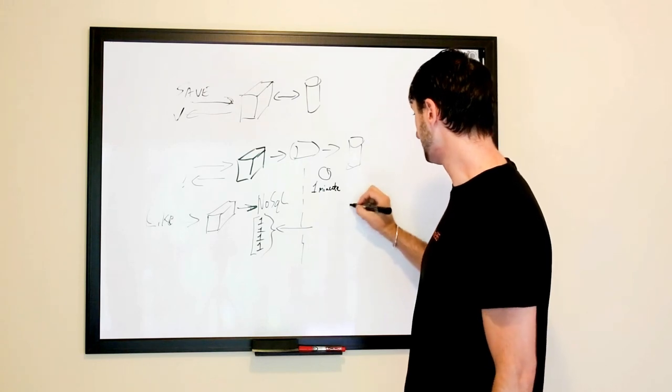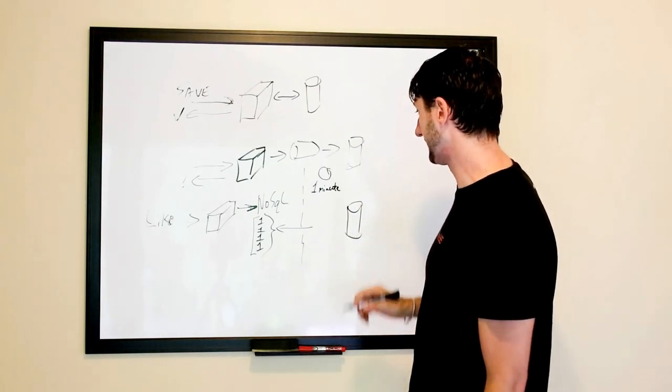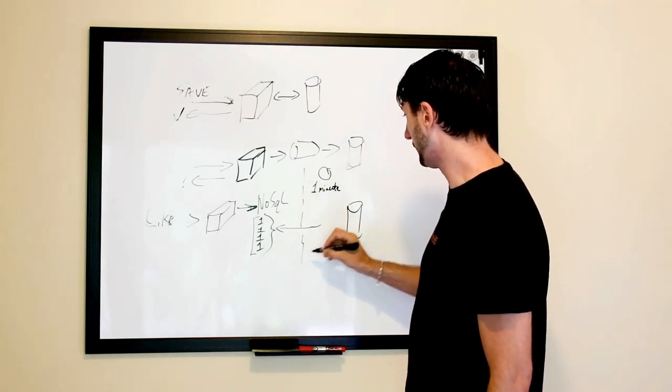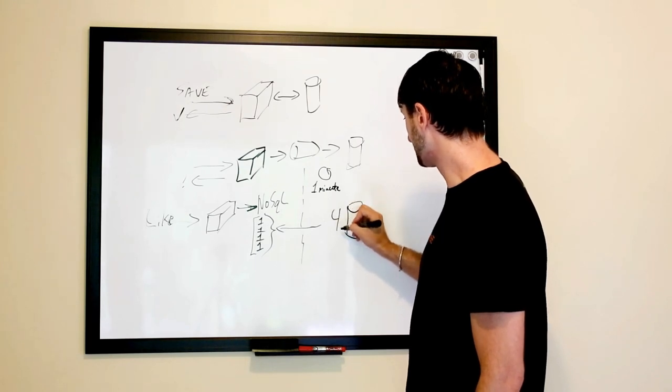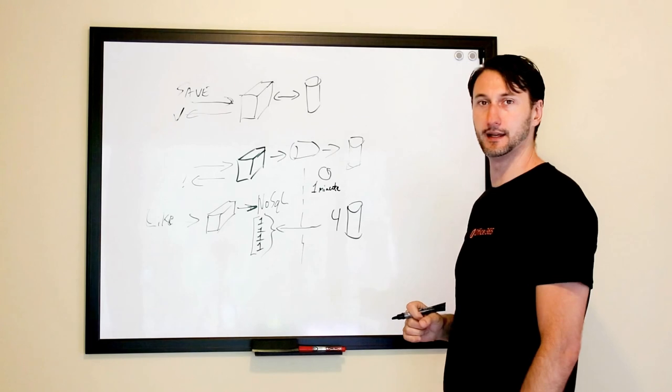And so every minute then, the database is getting the count. So in this case, it's going to pull the four, it's going to do the math, and it's going to store four likes to this piece of content into the database.